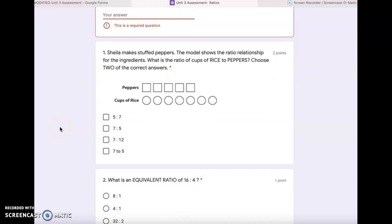Number 1. Sheila makes stuffed peppers. The model shows the ratio relationship for the ingredients. What is the ratio of cups of rice to peppers? Choose two of the correct answers. Remember, rice to peppers.